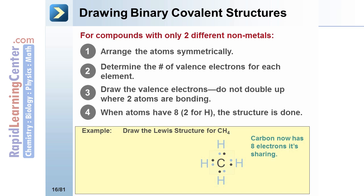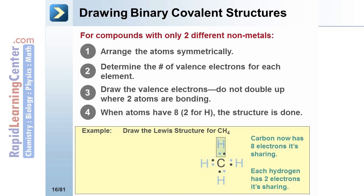Carbon now has eight electrons that it's sharing. Each hydrogen has two electrons that it's sharing. Notice that both the carbon and the hydrogen get to count the electrons they are sharing together.